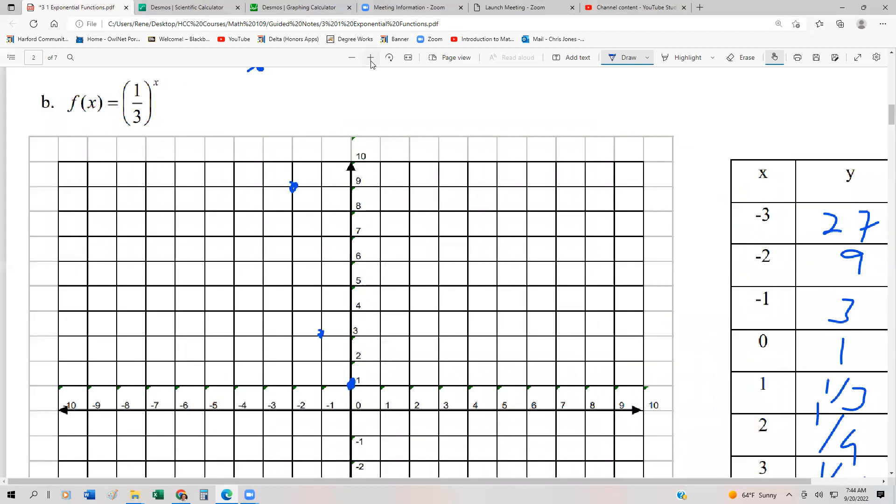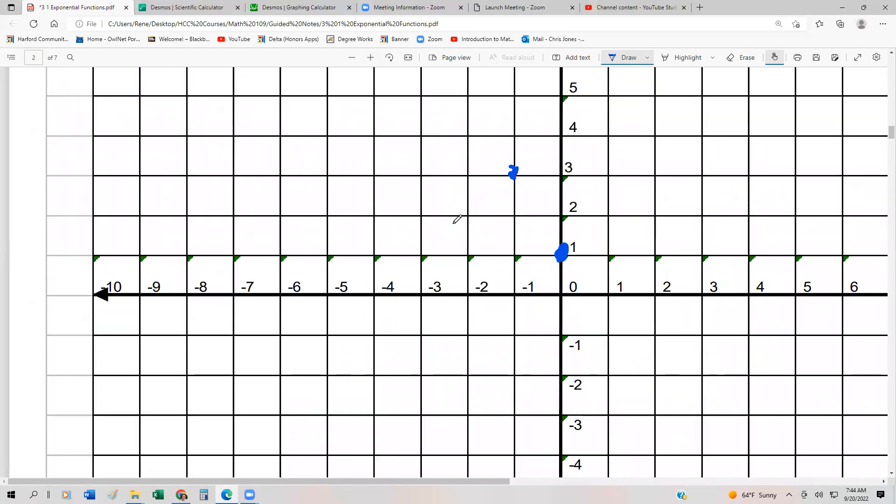And then we have this one comma one third. So again, I'm going to zoom in, just so that way I can go ahead and plot this. All right, so one, one third, I know that's more like a half, but just to exaggerate it. And then one ninth, and then one 27, like almost on the axis.